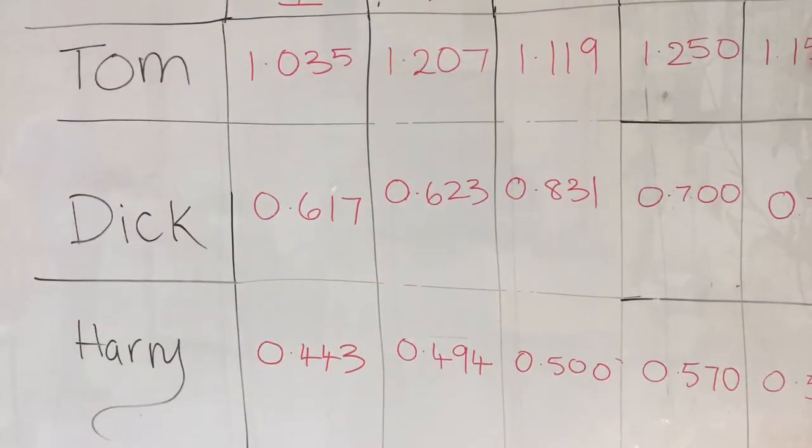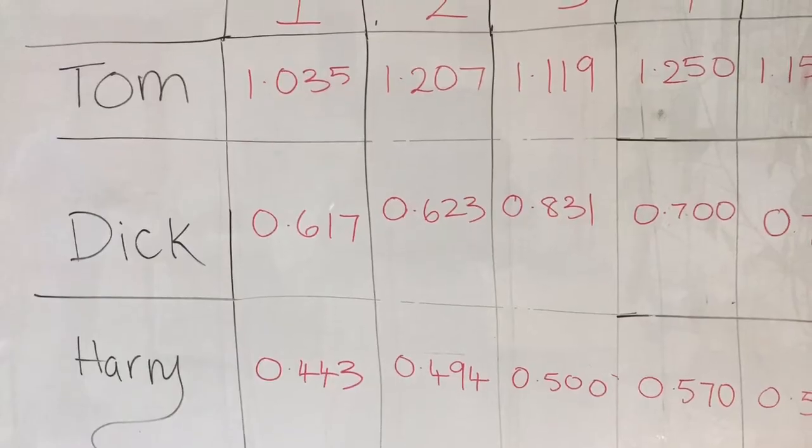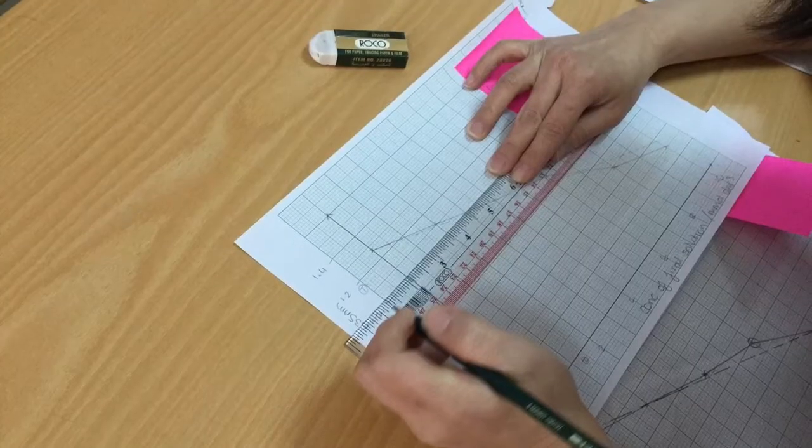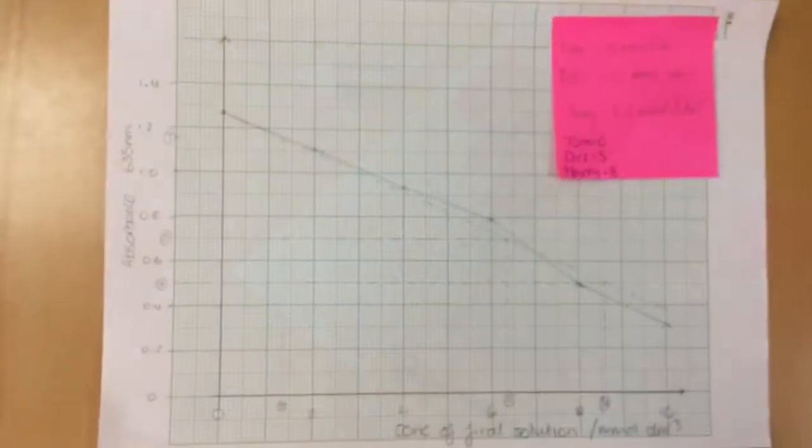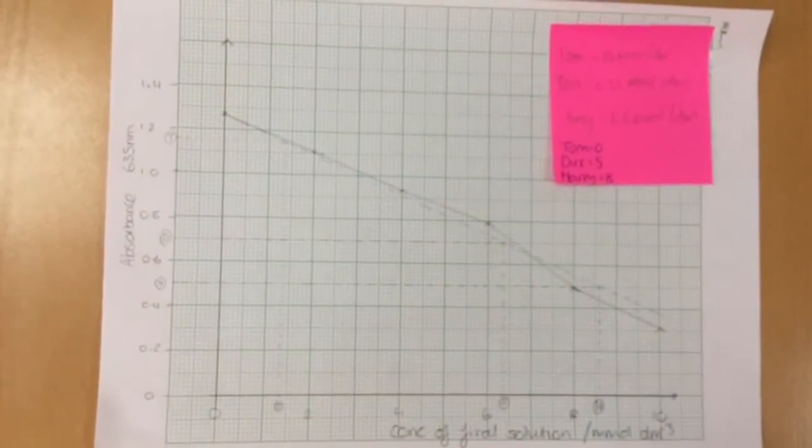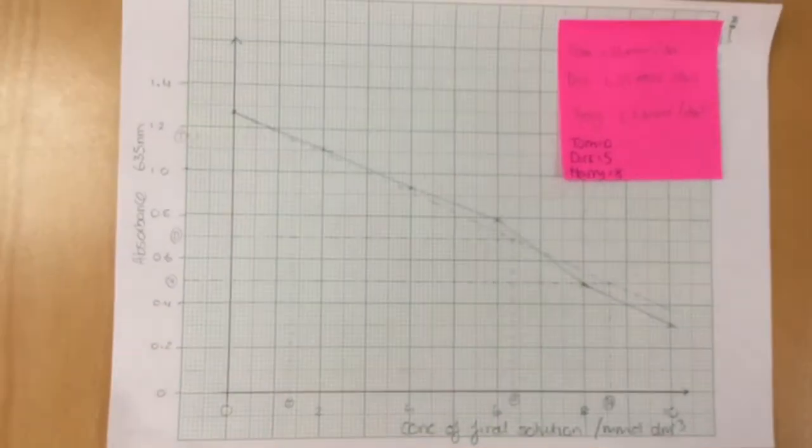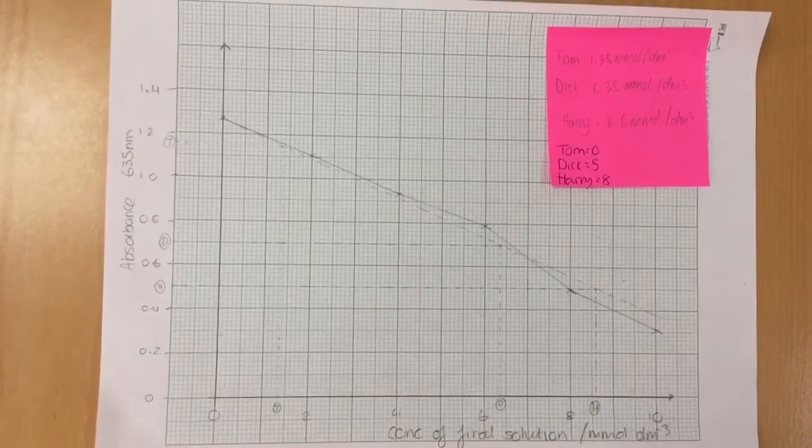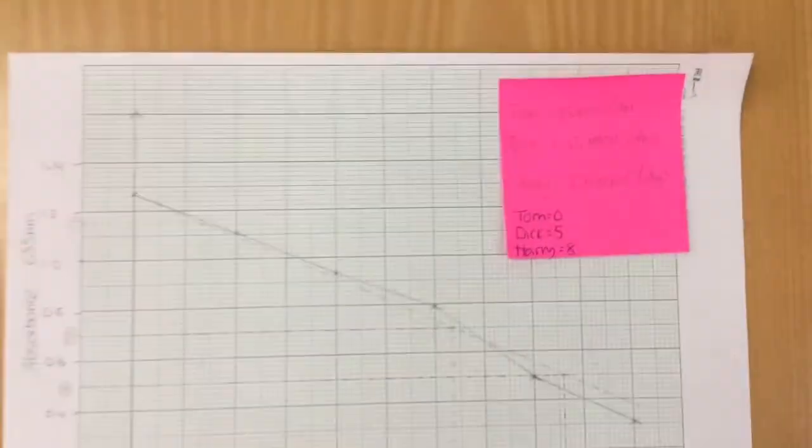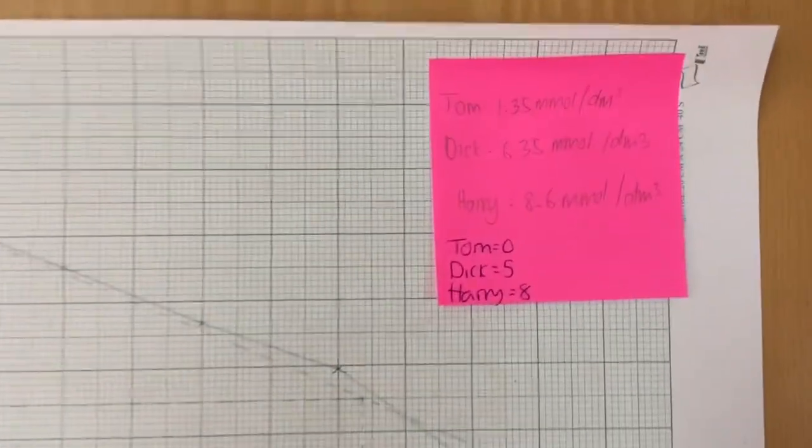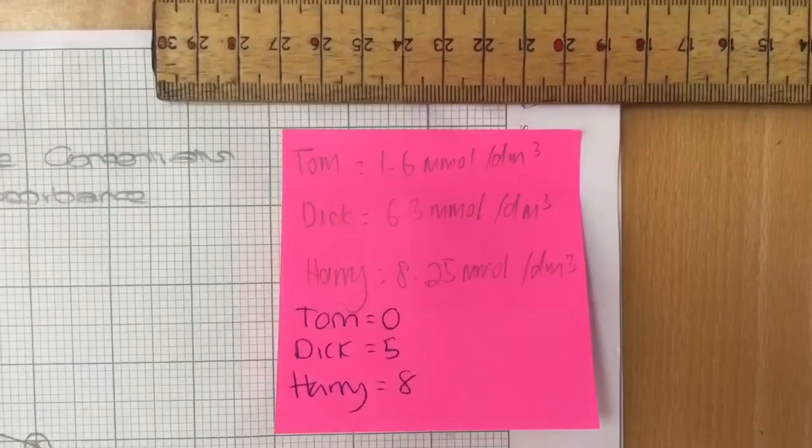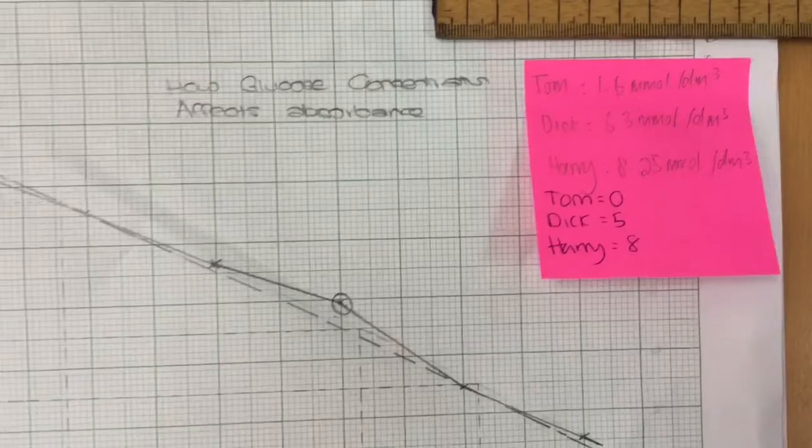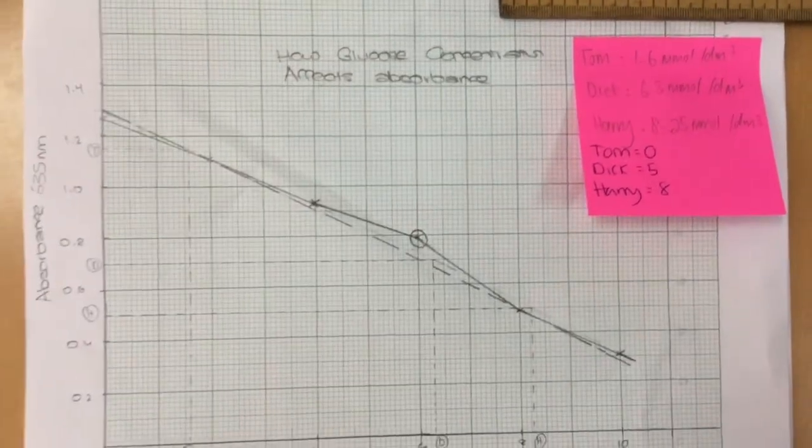The students then pooled their results and calculated a mean. We then used all the results and calculated a mean for absorbance. Using the mean absorbance, we read off from the y-axis until it intercepted the line. We then drew a ruled line down to the x-axis and read off the scale to see where it intercepted. This then gave us the concentration of glucose in the urine.